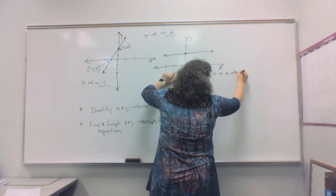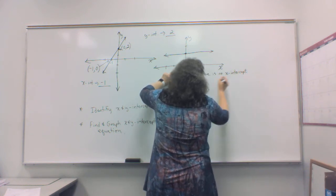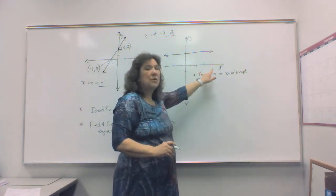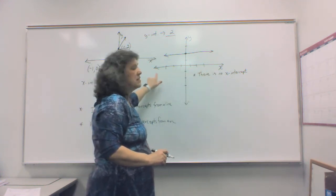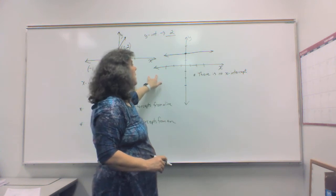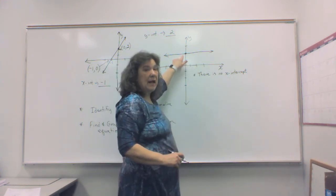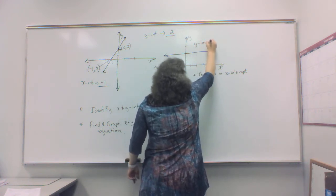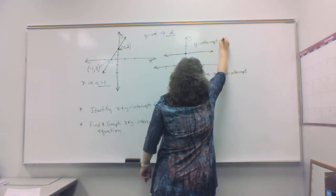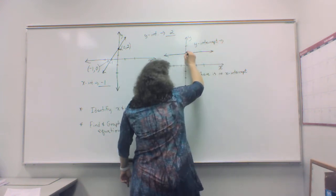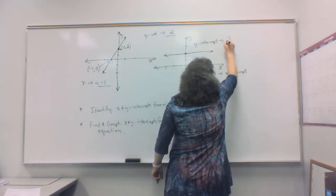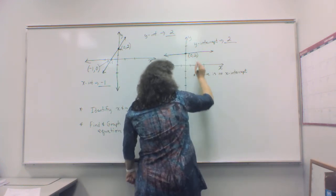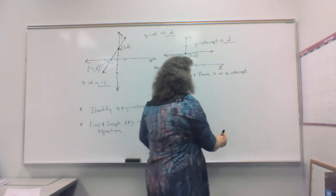And when you have something like this, you will be given a choice, and you will click the circle for there is no x-intercept because the line does not cross the x-axis. It only crosses the y-axis, so therefore, you only have a y-intercept, and this y-intercept is going to be 1, 2. It is the number 2, and again, that ordered pair would be 0, 2.